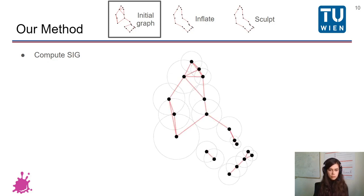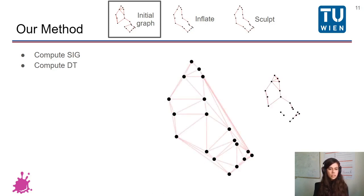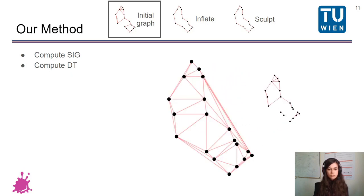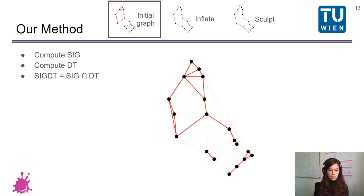This is now our spheres of influence graph, but we also need the Delaunay triangulation. So we compute that on the input points, we save away the spheres of influence graph, and then we combine them, we intersect them to obtain the SIGDT. This graph is now usually used as the initial graph for our next steps.